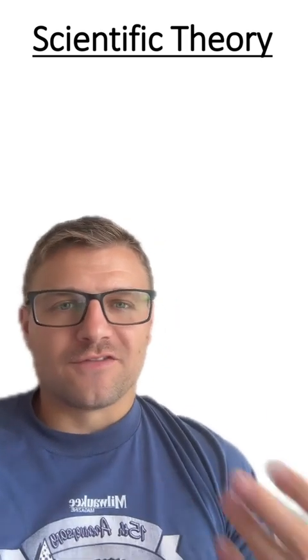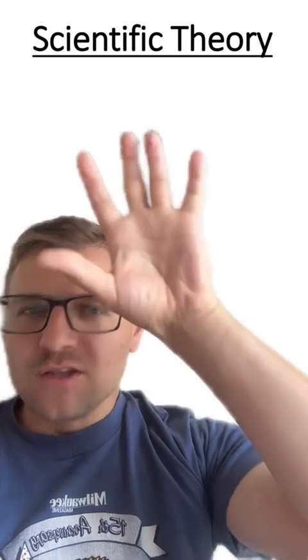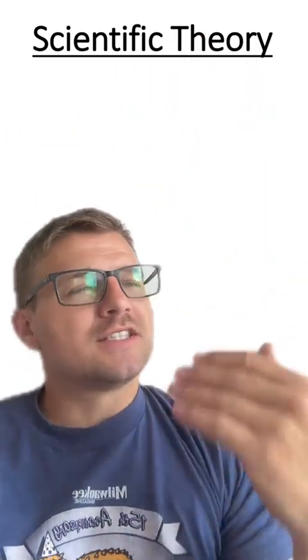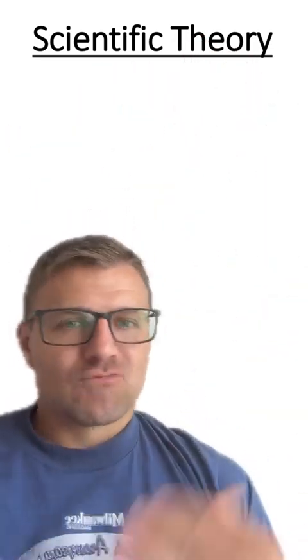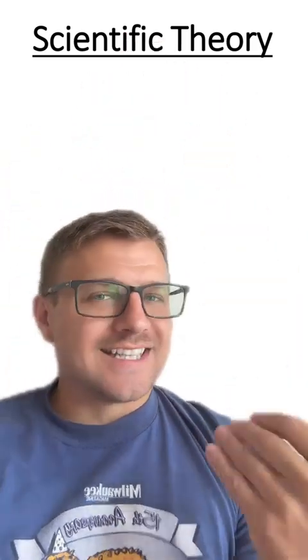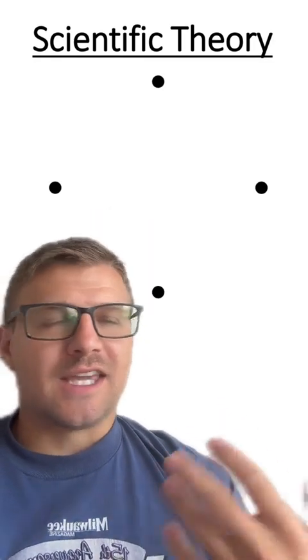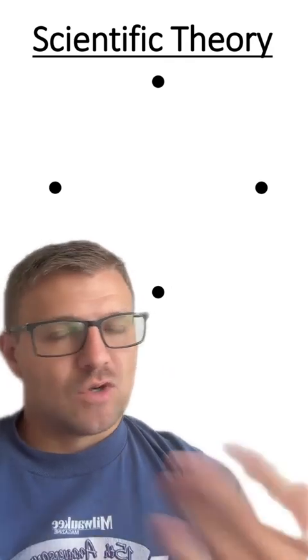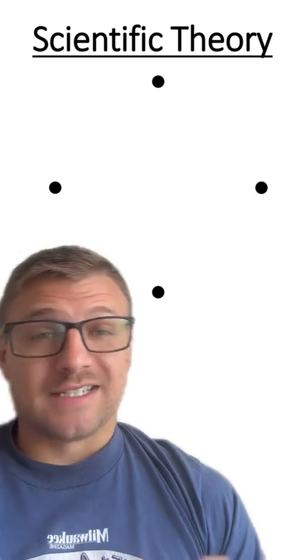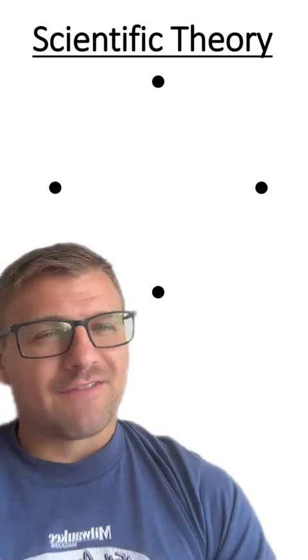All right, so here's an analogy for what a scientific theory is. Imagine there is a shape behind this white blank space and you can feel around the shape, but you can't actually see what the shape is with your own eyes. So what you start doing is you start feeling around these different locations and start taking data points. So you get some data and you start hypothesizing and making conclusions based on this evidence. So obviously, it can be a triangle, it can be a diamond, it can be a circle, it can be a square, but it can't be a line. The evidence does not support that it's one straight line.